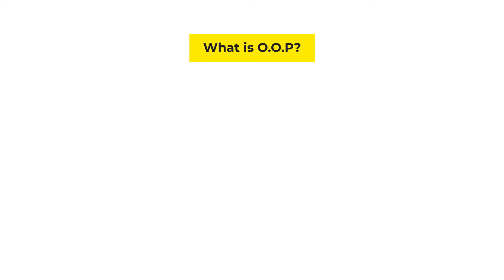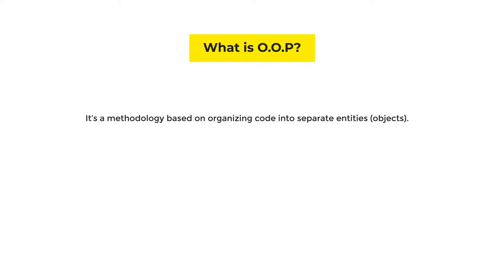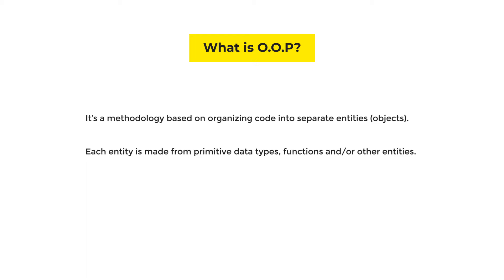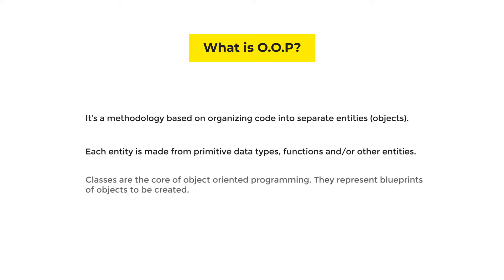Welcome back. In this part of the series we are going to take a deep dive into the world of object-oriented programming, also known as OOP. OOP is basically built on the idea of splitting an application into separate entities. It's pretty much similar to the concept of functions but on a larger scale. Each one of those entities has its own properties, fields, and methods — they're essentially a mixture of primitive types, functions, and other entities. Now one of the most important pillars of OOP, if not the most important one, is classes.